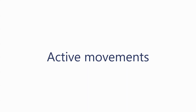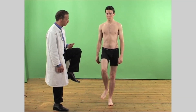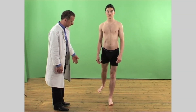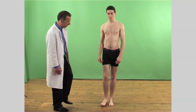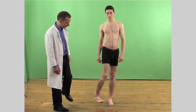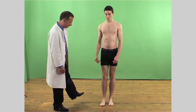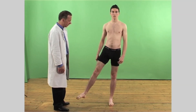Next, get the patient to perform active movements. These are performed in the standing position and, if necessary, offer the patient support. Instruct or demonstrate to them how to flex, extend, abduct, adduct and to rotate the hip internally and externally. Finally, ask them to demonstrate circumduction by drawing a circle using the whole leg. Internal and external rotation may also be performed in the supine position with the patient's hip and knee flexed at 90 degrees.